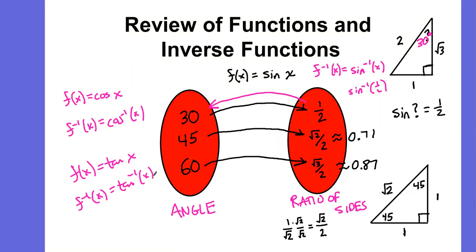Make sure you understand one more thing. If you have the sine of some angle equals 1 half and you want to find the angle, you need to do the inverse sine of the ratio of sides, the inverse sine of 1 half. That will give you the missing angle.